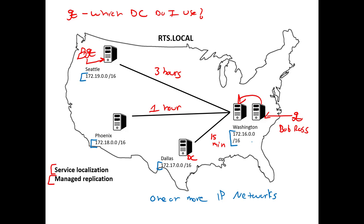I compare this to phone numbers. If you live in the Washington area, your area code might be 202. In Seattle it could be 986. Your area code is tied to your geographic location — you cannot have area code 202 in both Washington and Seattle, because a phone call wouldn't know whether to stay local or route across the country. That exact concept holds true for IP addresses — it's an identical concept.